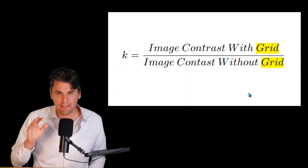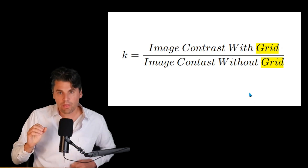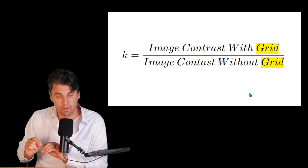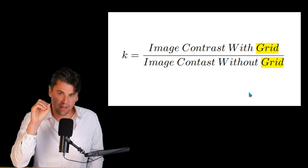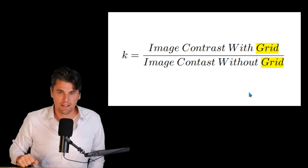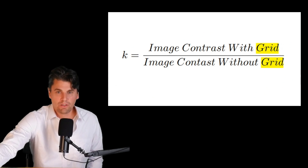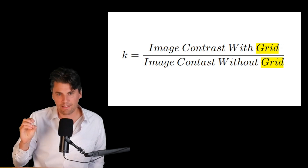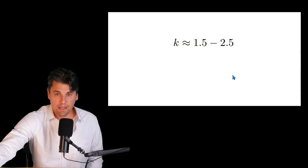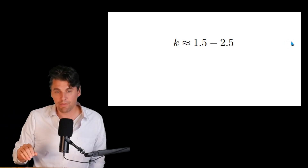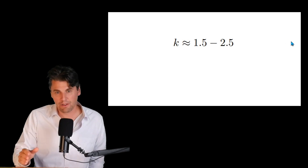Now let's talk about how we can quantify the improvement. By blocking scatter, the background haze is reduced, improving contrast in our x-ray image. We have an improvement factor K, which is the image contrast with the grid divided by the image contrast without the grid. You want K to be greater than one. Typically in x-ray imaging, K is on the order of one and a half to two and a half — your contrast improves by about a factor of two.